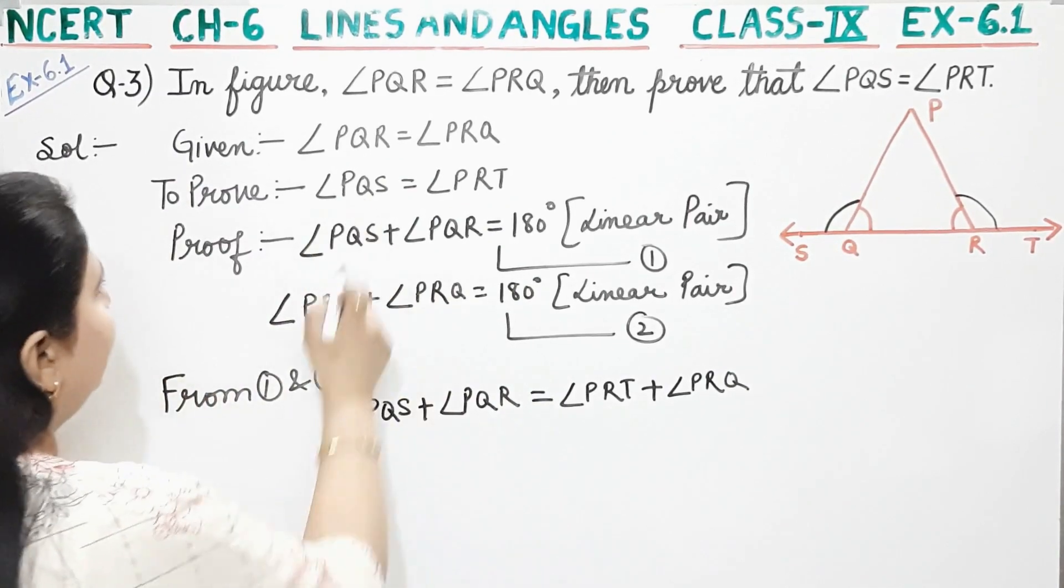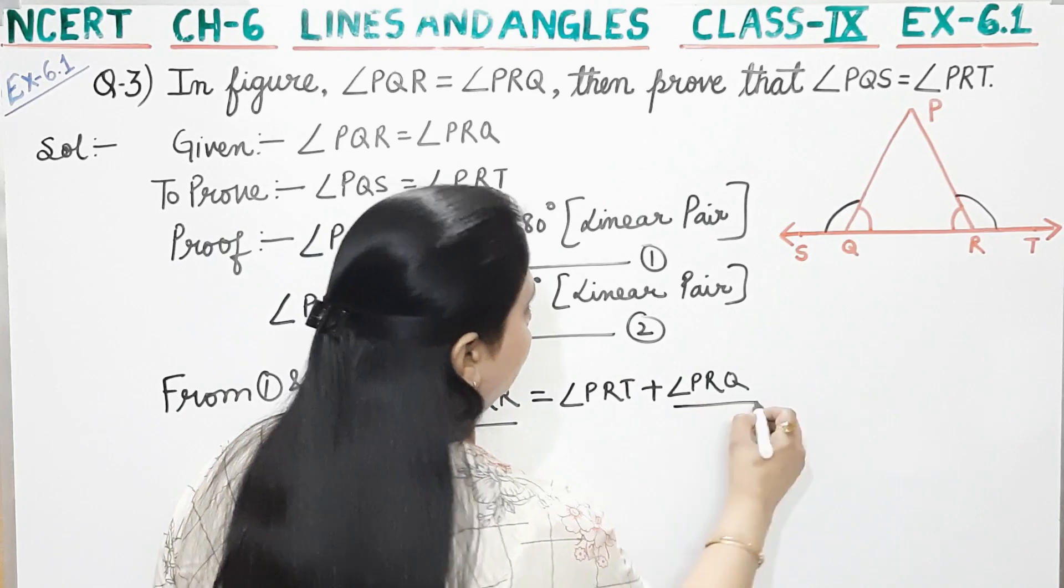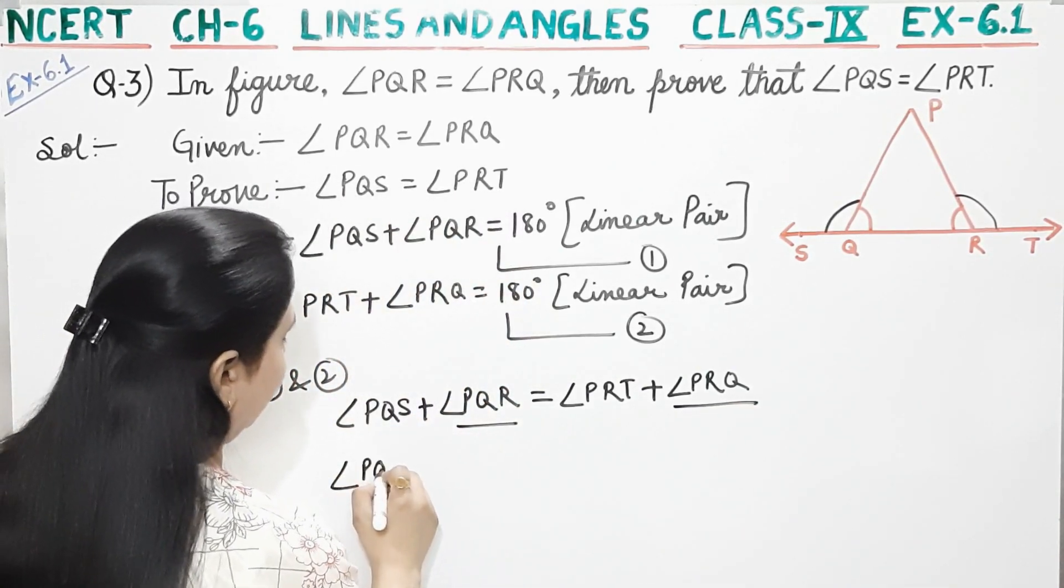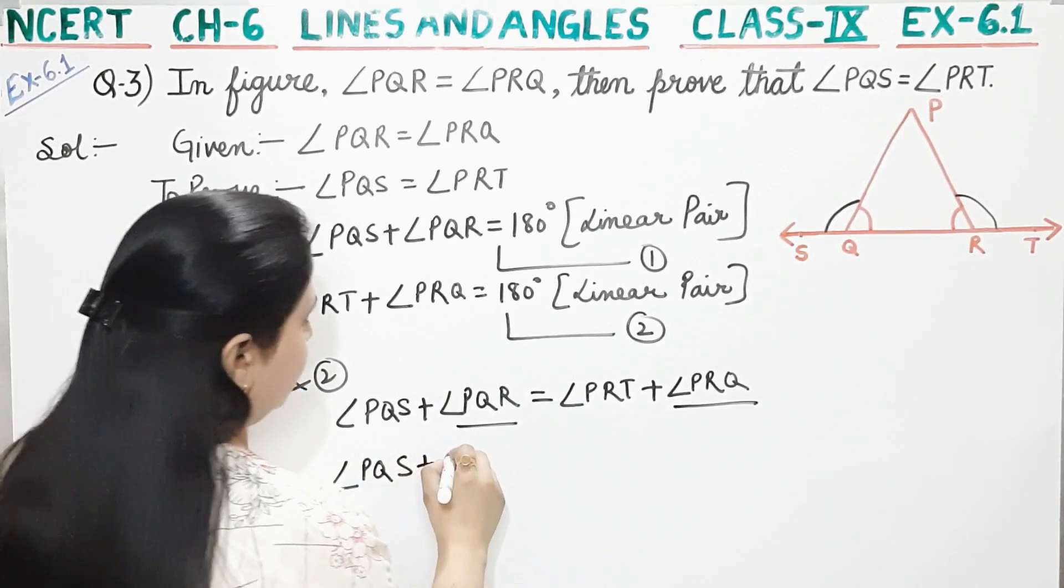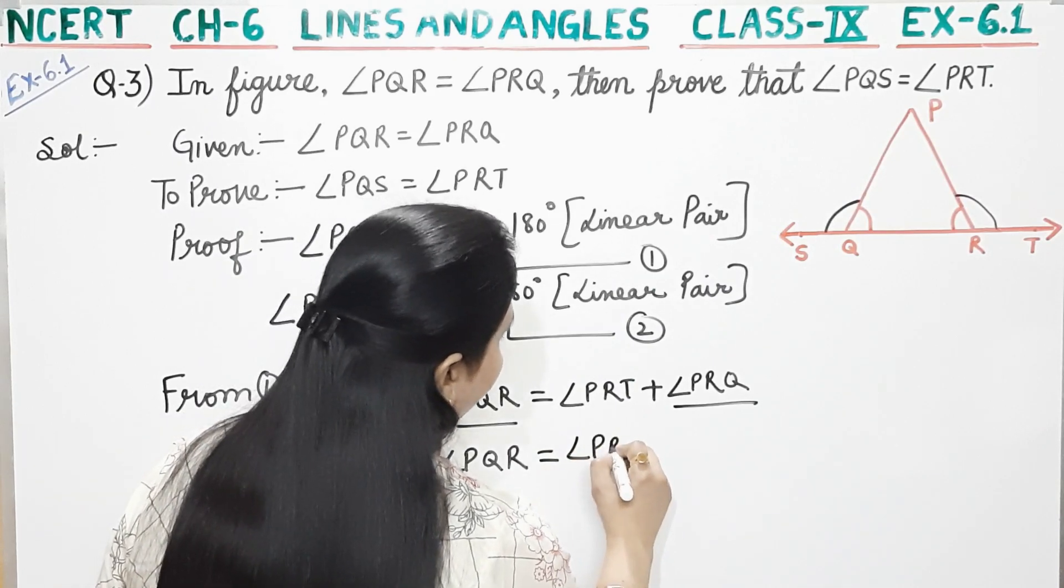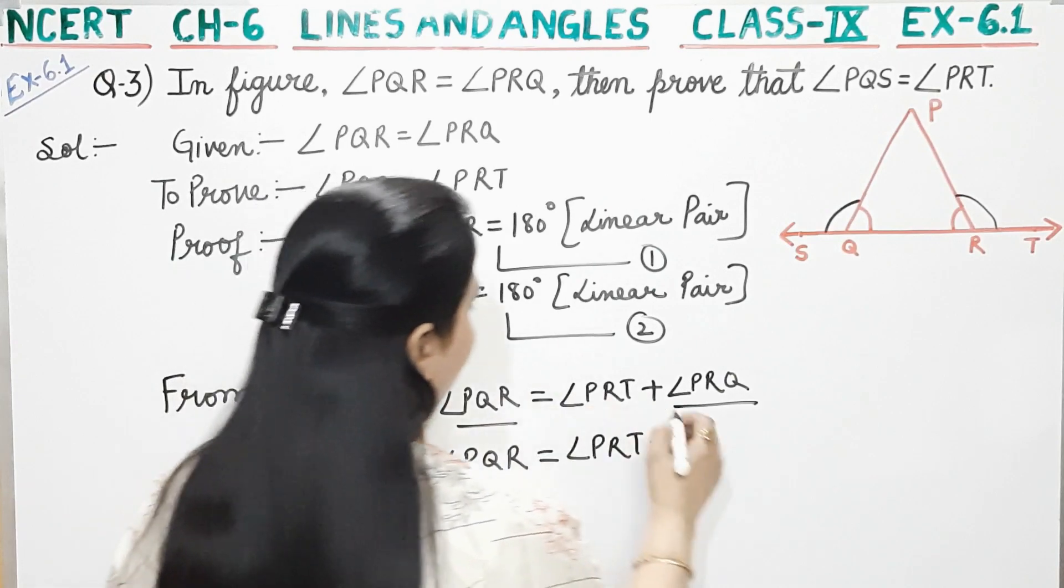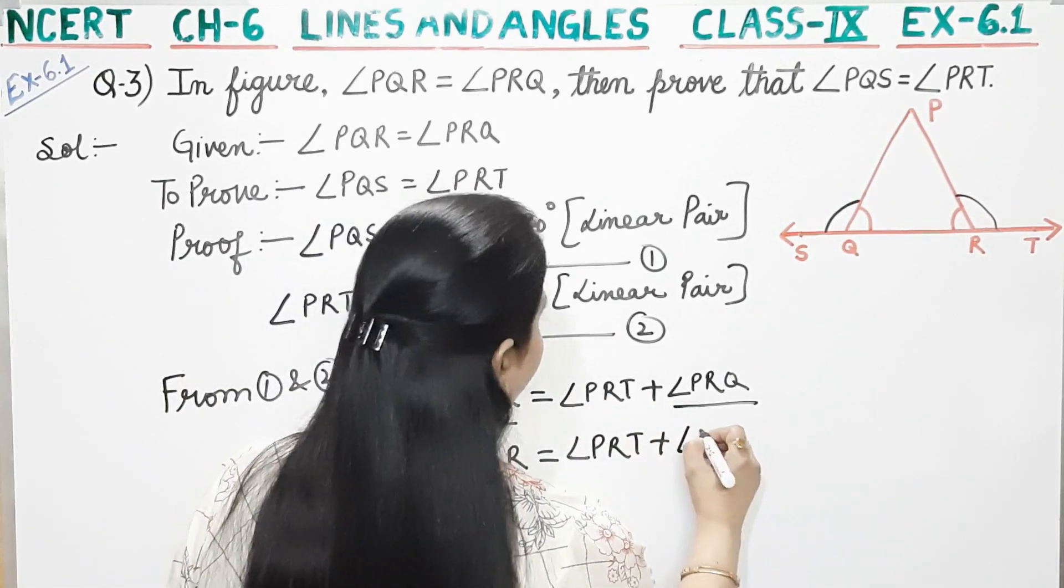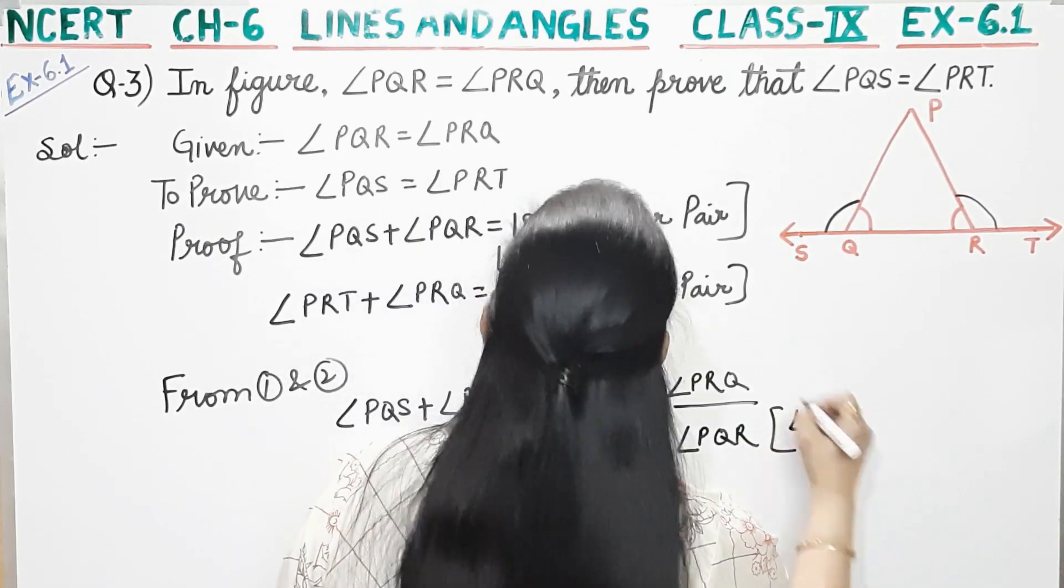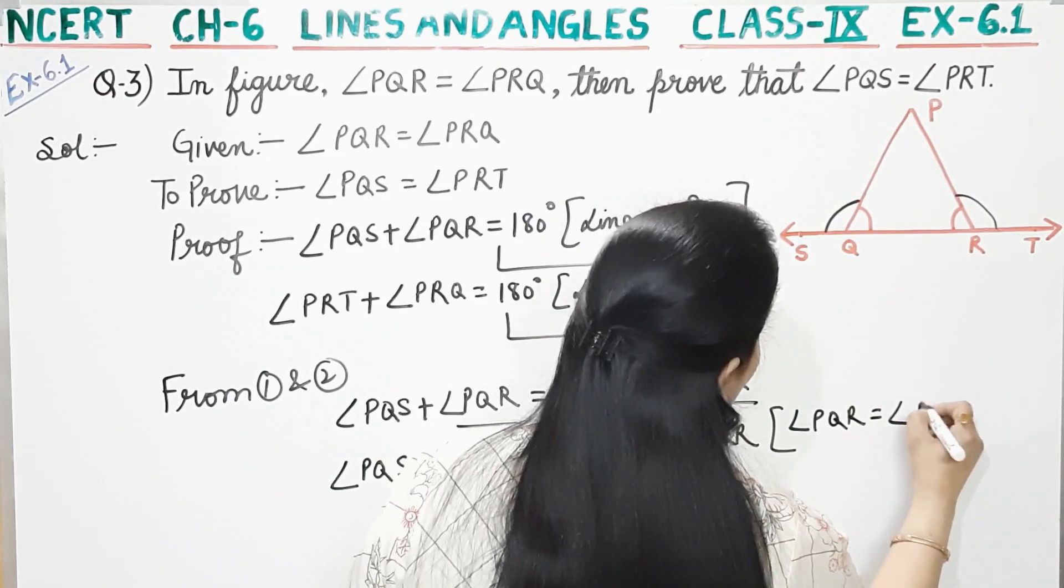Now, here, we have been given that angle PQR, this angle, and PRQ, this angle, both are equal. So, we can write both the same. It means PQS plus angle PQR is equal to angle PRT plus, I can write PQR instead of PRQ, because both are equal. This is given. So, PQR, why is it written here, because angle PQR is equal to angle PRQ, and this is given.